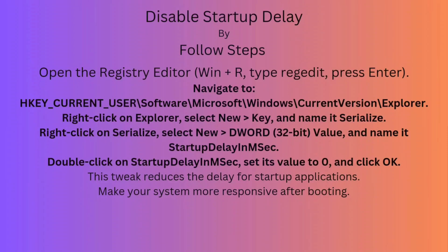Disabling startup delays can speed up the launch of startup programs. In the Windows icon select Run, or press Windows+R, and type 'regedit' and press Enter. Navigate to HKEY_CURRENT_USER, then Software > Microsoft > Windows > CurrentVersion > Explorer. Right-click on Explorer, select New > Key, and name it 'Serialize'. Right-click Serialize, select New > DWORD (32-bit) Value, and name it 'StartupDelayInMSec'. Double-click on StartupDelayInMSec, set its value data to zero, and click OK. This will reduce startup delays.